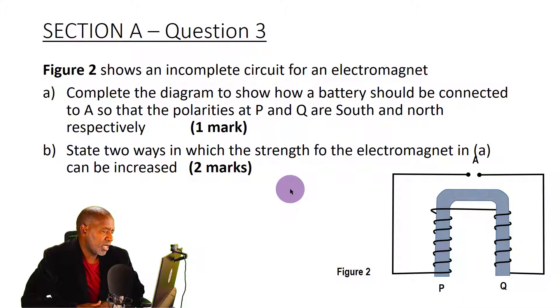In part B we are asked to state two ways in which the strength of the electromagnet in A can be increased. So there is a typing error here I'm going to correct that.